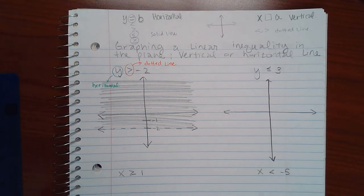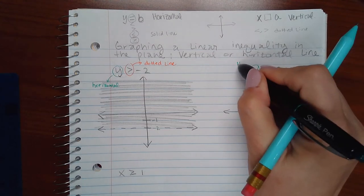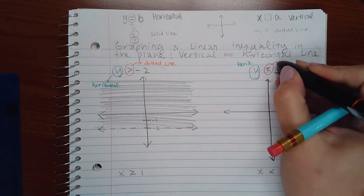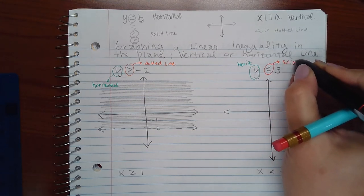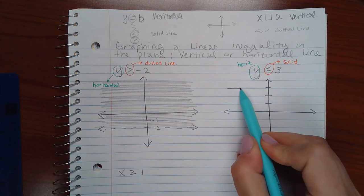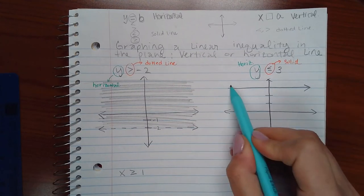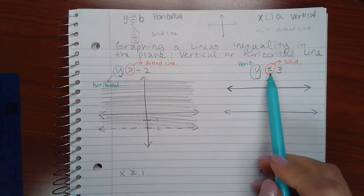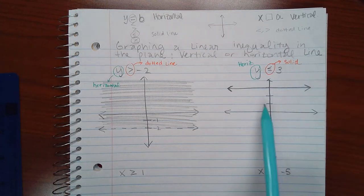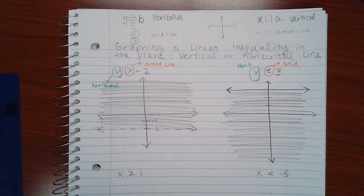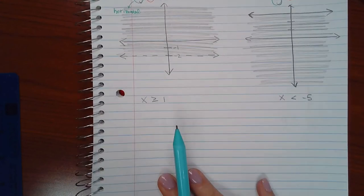For the second example, we again have y only, so the line is going to be horizontal. However, this time there is an equal bar, which means my line is going to be solid. y = 3 is at 1, 2, 3, so I draw a solid horizontal line at y = 3. Then since it says y is less than or equal to 3, I'm going to shade below that horizontal line.